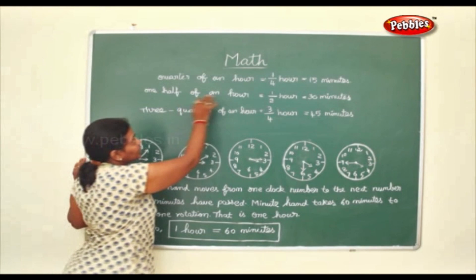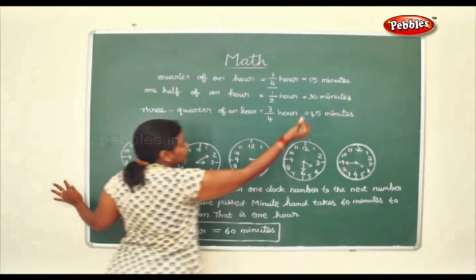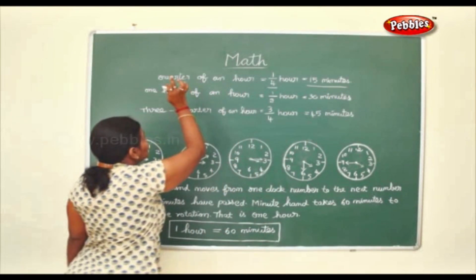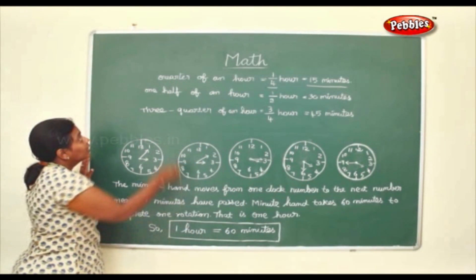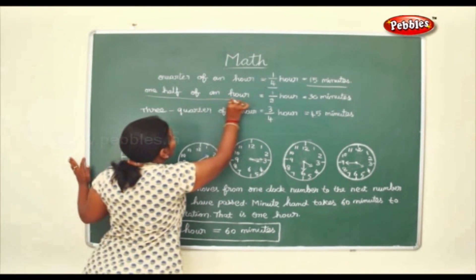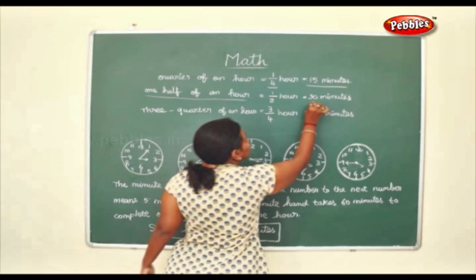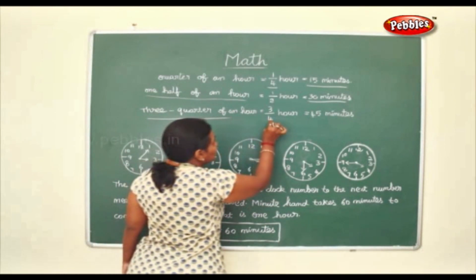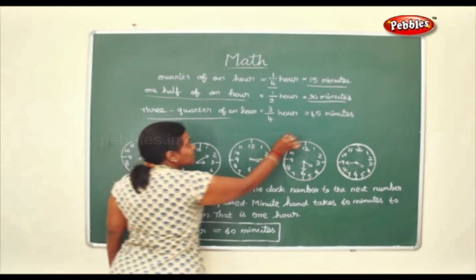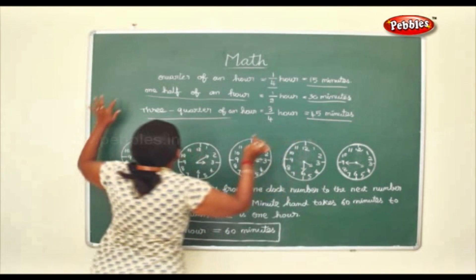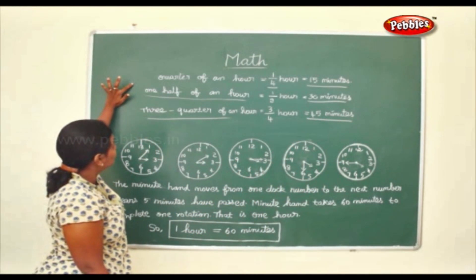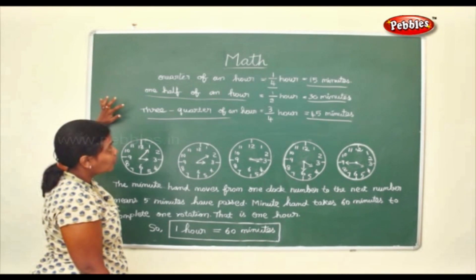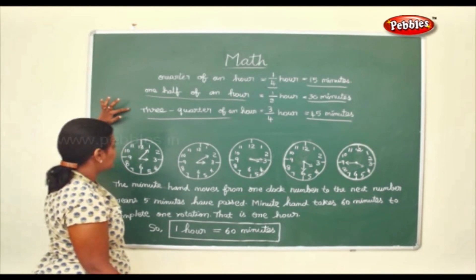A quarter of an hour is called one fourth of an hour, or fifteen minutes. One half of an hour, or half an hour, is thirty minutes. Three quarters of an hour is forty-five minutes. So: quarter of an hour is fifteen minutes, half an hour is thirty minutes, and three quarters of an hour is forty-five minutes.